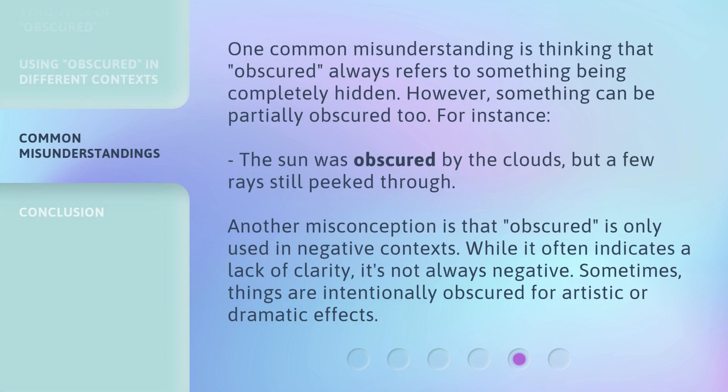One common misunderstanding is thinking that obscured always refers to something being completely hidden. However, something can be partially obscured too. For instance, the sun was obscured by the clouds, but a few rays still peeked through. Another misconception is that obscured is only used in negative contexts. While it often indicates a lack of clarity, it's not always negative. Sometimes, things are intentionally obscured for artistic or dramatic effects.